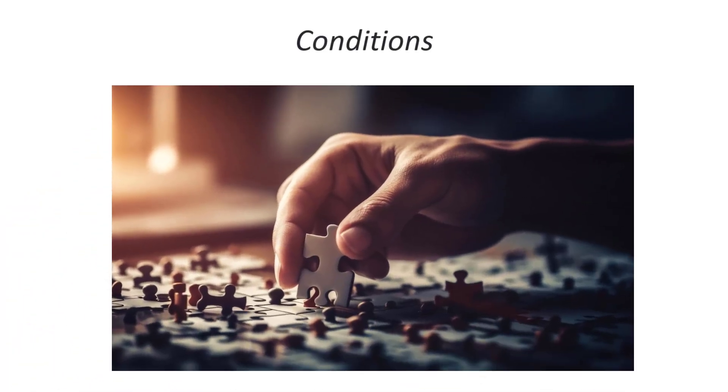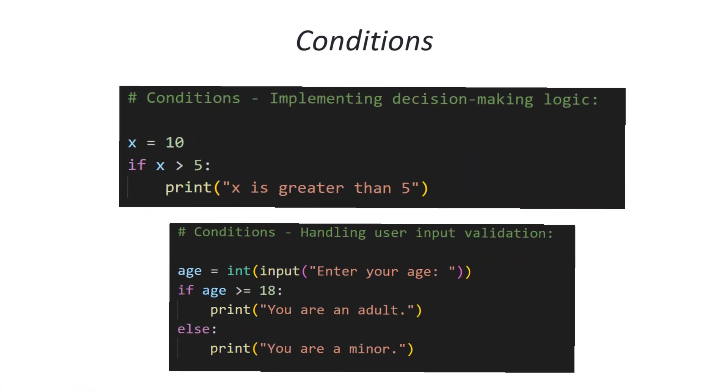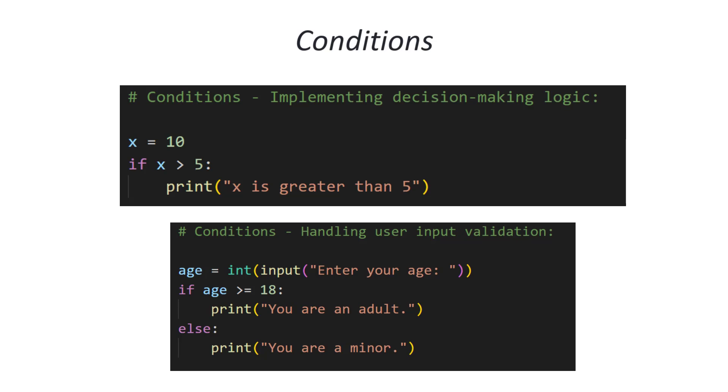The next piece of the Python puzzle are conditions and loops. In Python, conditions and loops are powerful control structures that shape the flow of a program, allowing developers to make decisions and iterate over data efficiently. Let's start with conditions. Conditions, often implemented using if statements, allow you to execute certain code blocks based on whether a specified condition is true or false. Here you can see some of their common use cases, which are implementing decision-making logic and handling user input validation.